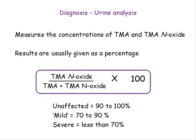The initial diagnosis for most people with the disorder would be a urine analysis, which measures the concentrations of trimethylamine and trimethylamine N-oxide in the urine. The results are expressed as a percentage: the amount of trimethylamine N-oxide divided by the total of trimethylamine plus trimethylamine N-oxide, times 100. In unaffected individuals, this value will be about 90 to 100%. For mild trimethylamine urea, about 70 to 90%, and in severe cases, less than 70%.